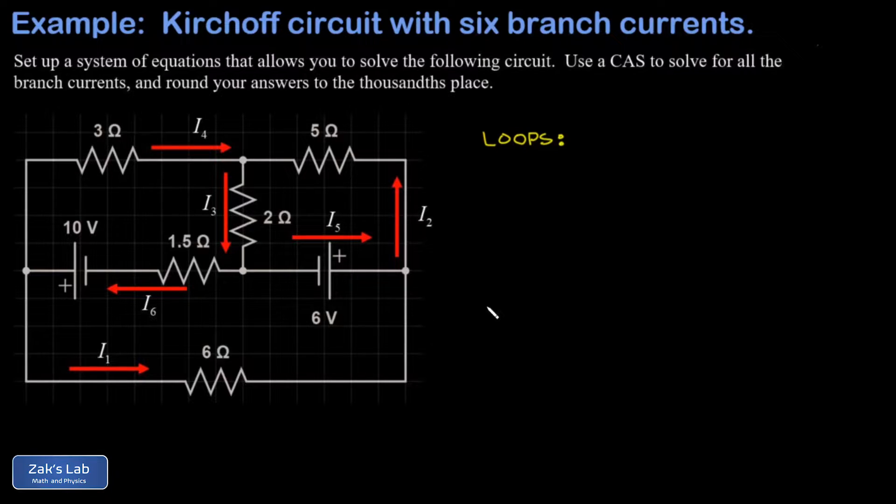The second part of Kirchhoff's laws is to look at the nodes in a circuit. And that's all the points where branches are connecting within the circuit. That's these white dots within the circuit. And again, it's a really common sense idea what Kirchhoff's laws say here. All the current entering a node must be equal to the amount of current exiting a node. So you can't have charge just building up at some point in a circuit. The amount going in has to be equal to the amount going out.